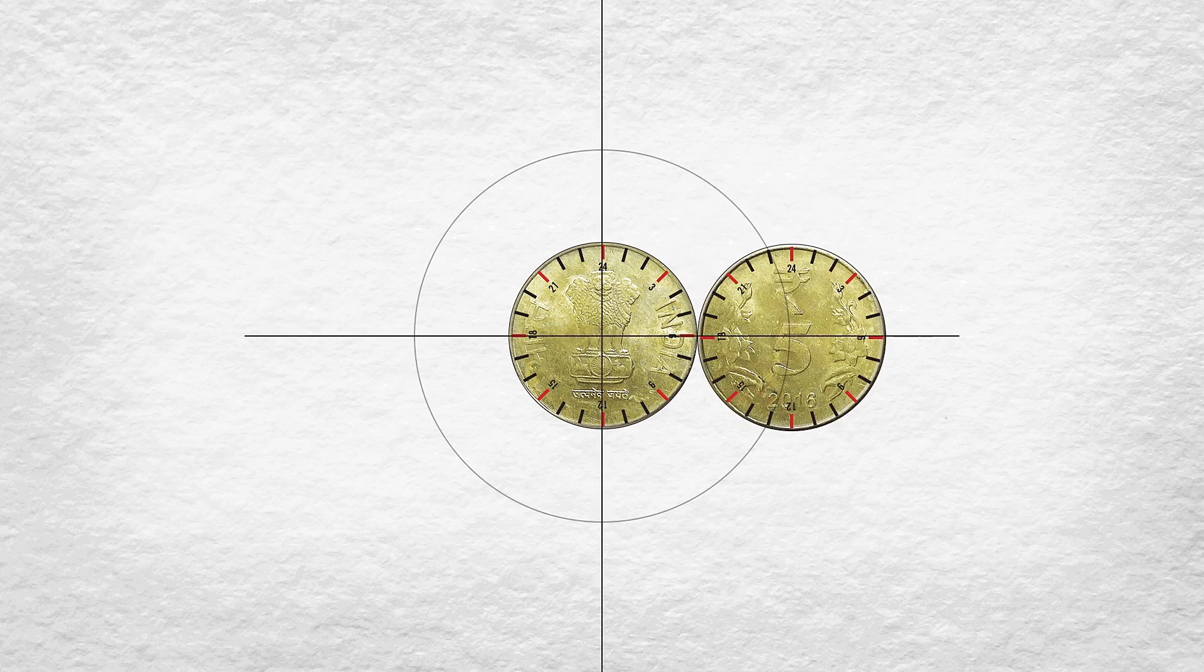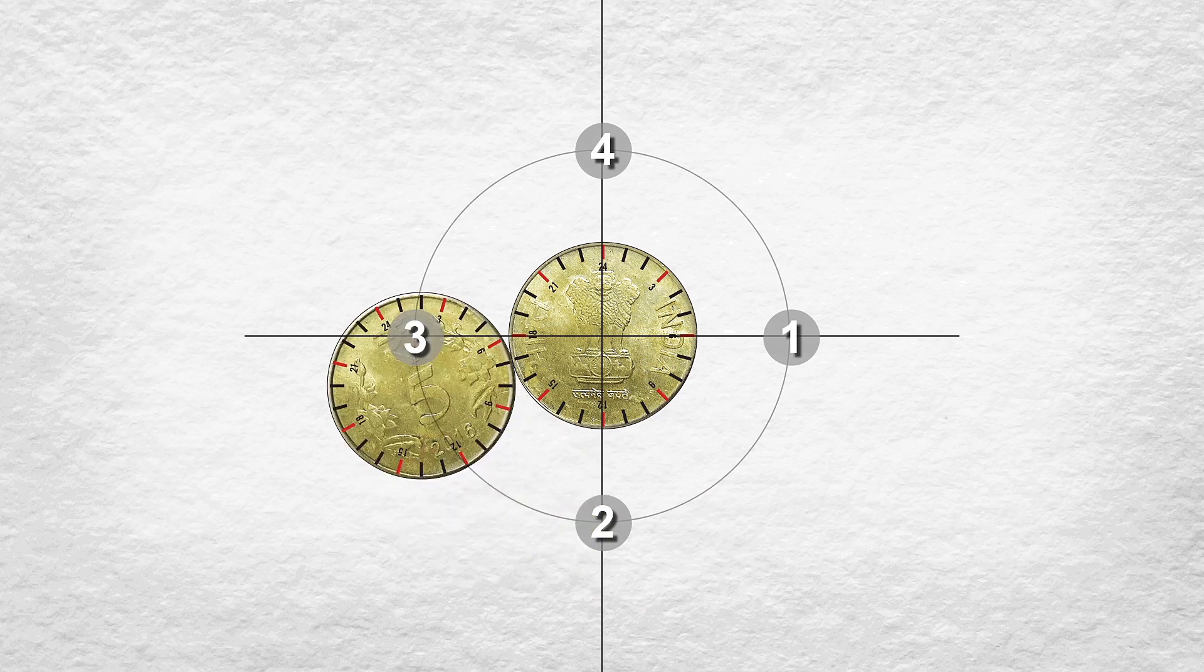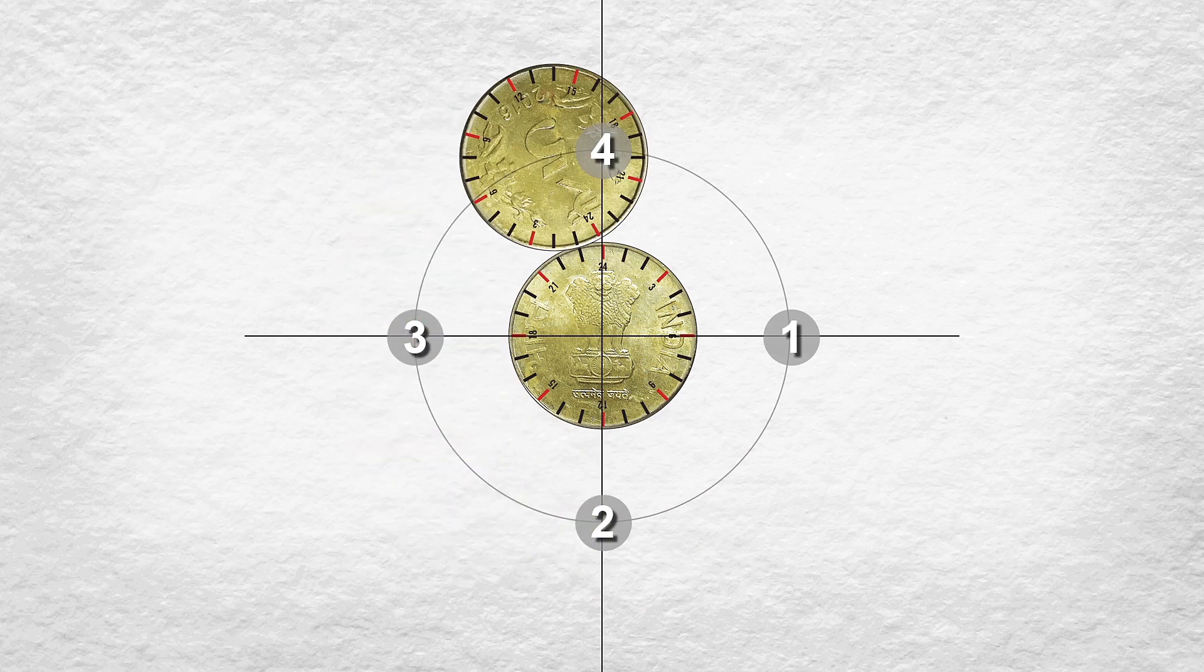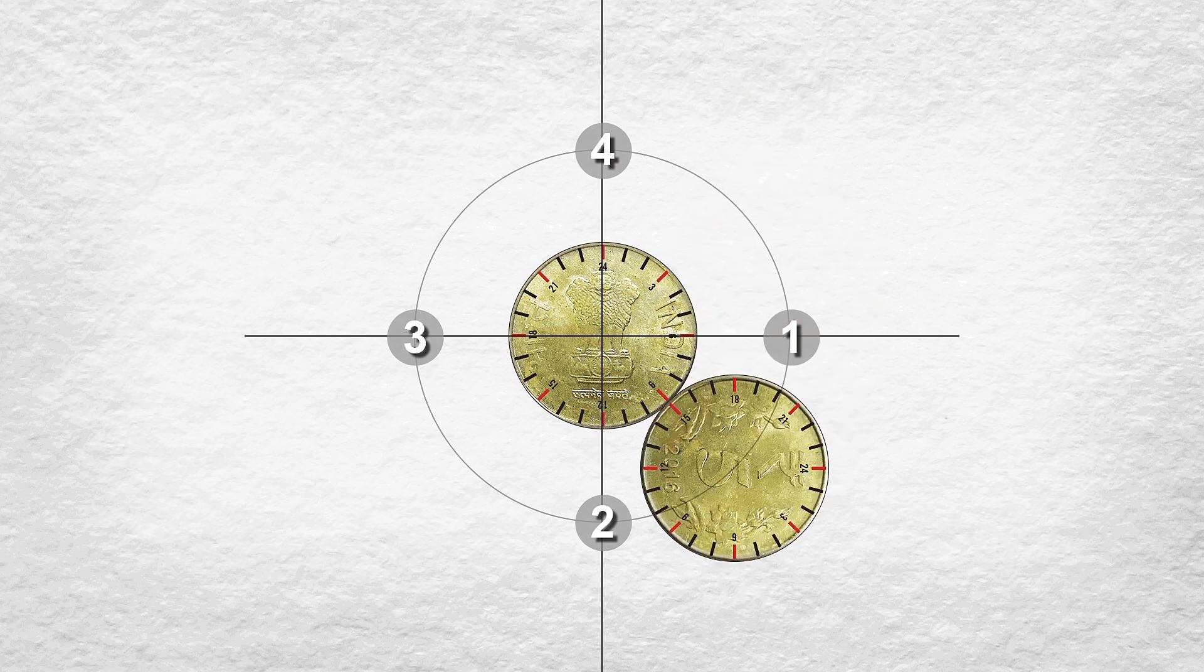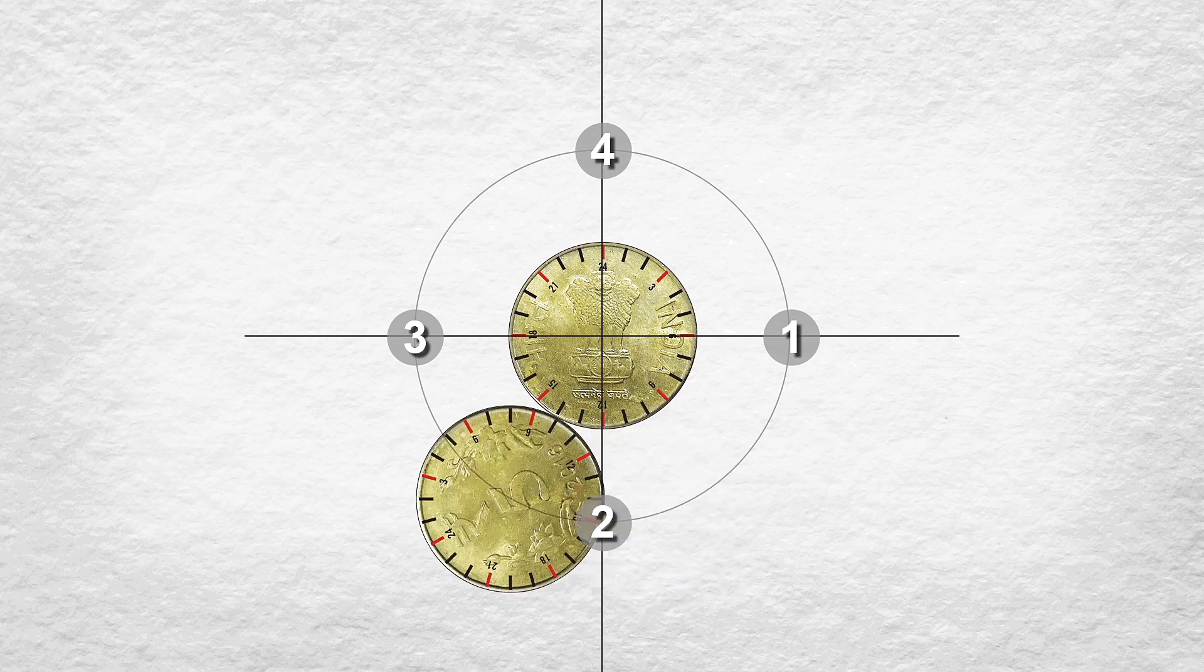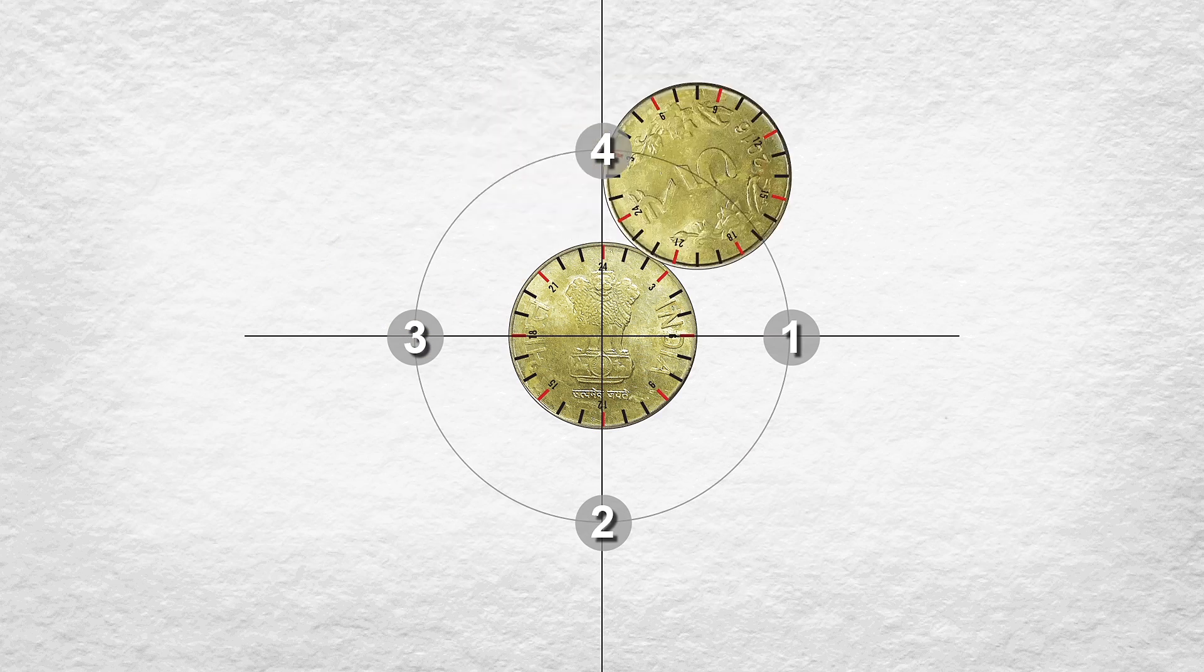So what we have done is we have drawn four positions here. Position one, from where the coin is going to start. Position two, which is about 90 degrees away angularly. Position three and position four. Now let us see how many times the coin spins around itself as it goes from the first position, starts from this position and comes back to this position.